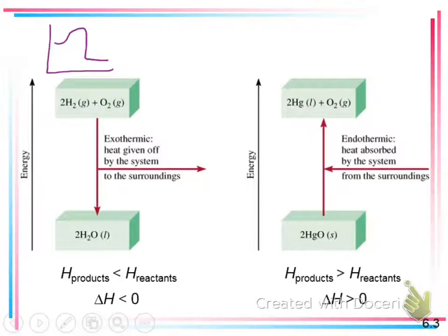So we said its energy diagram looked like this because it's releasing energy, that our products have less energy than our reactants. And so if that's the case, then our enthalpy value is going to be negative, just kind of like Q was when we said heat. So exothermic was negative.